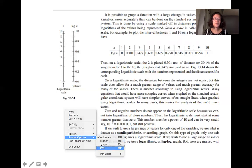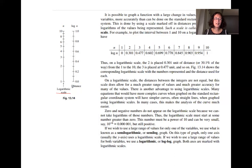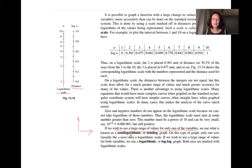When you wish to use a large range of values for only one variable, you can use what is known as a semi-logarithmic or semi-log graph — one axis uses a logarithmic scale and the other is linear. If you wish to use a large range of values for both variables, you can use a logarithmic or log-log plot, where both x and y axes use logarithmic scales.